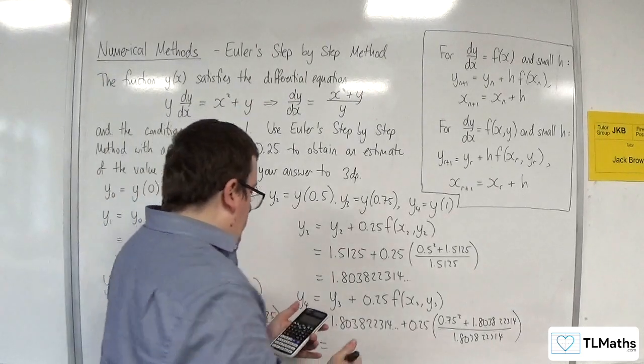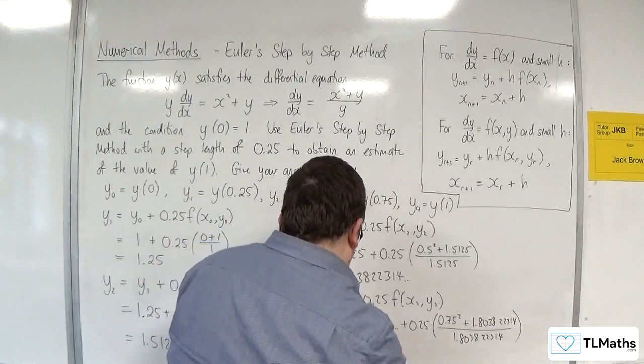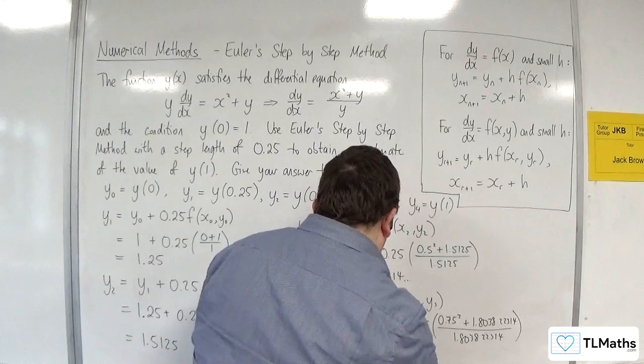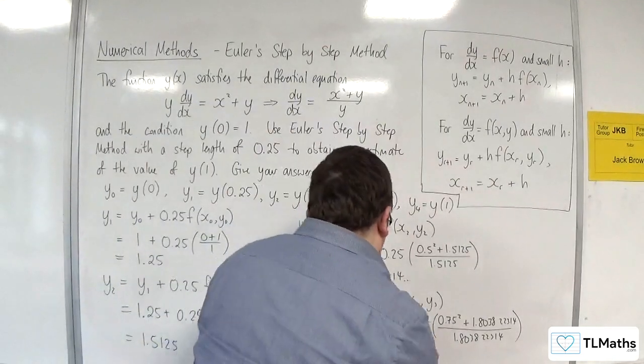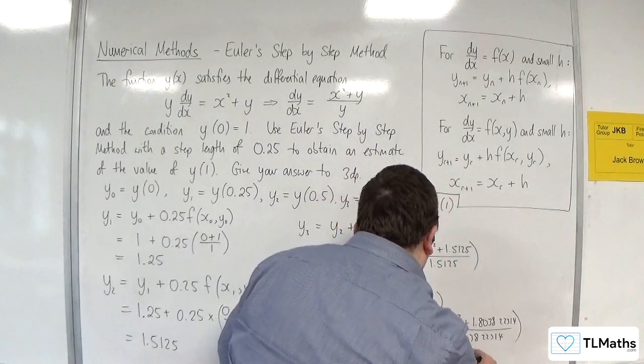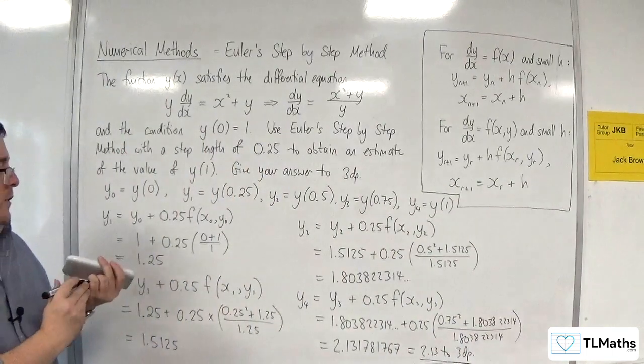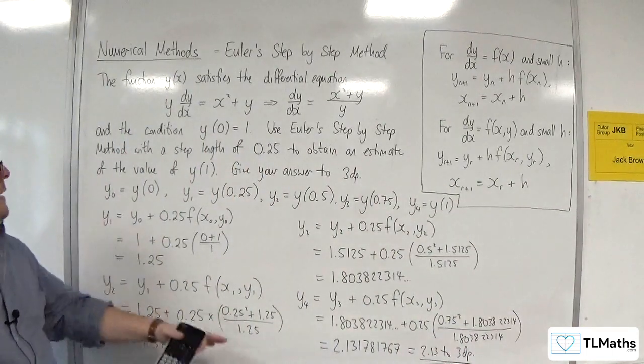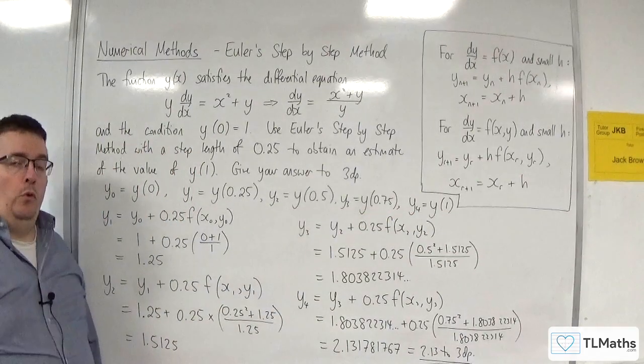And we should get 2.131781767, and I want this to 3 decimal places. So 2.13 to 3 decimal places. So that is the value of y of 1, which is my y₄.